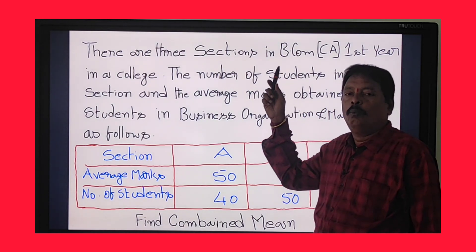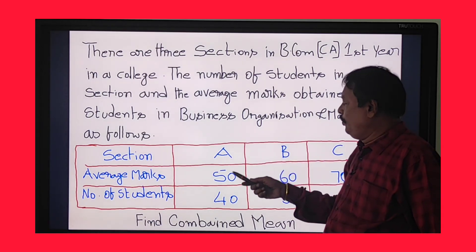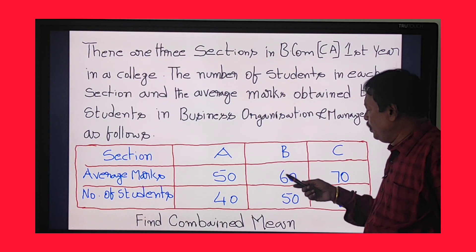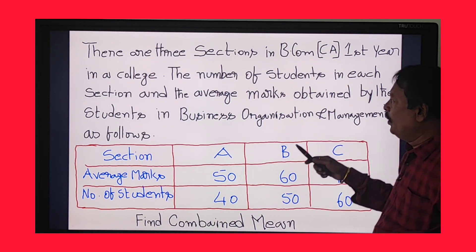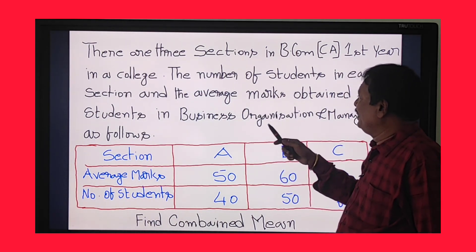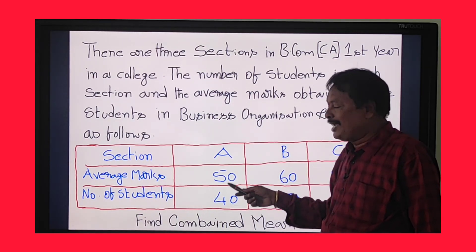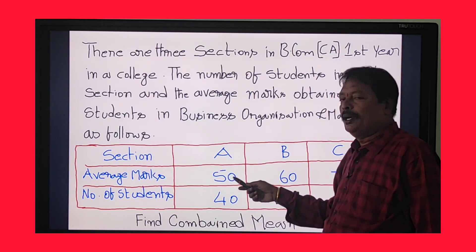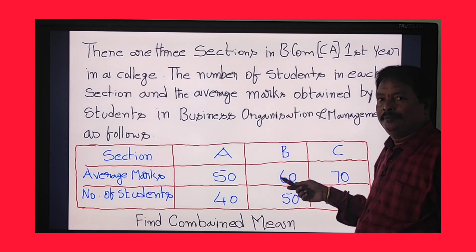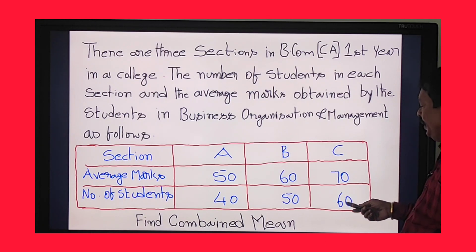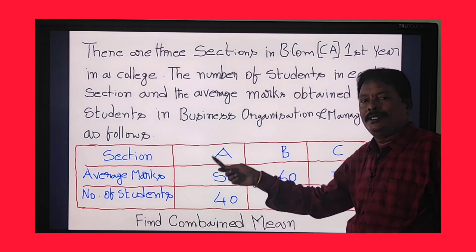There are three sections: A section, B section, and C section. C section has 60 students. Find the combined mean.